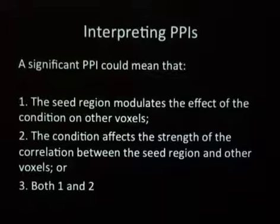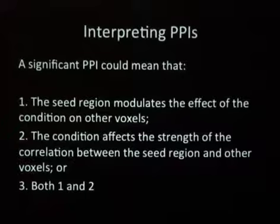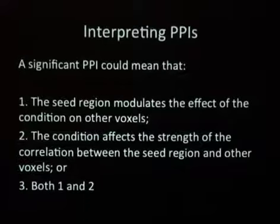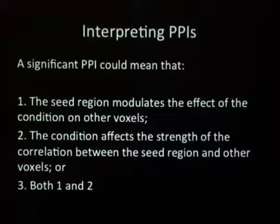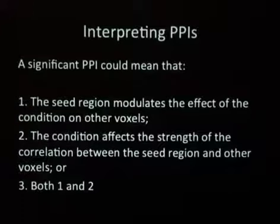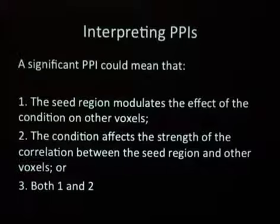Regarding positive versus negative PPI: a positive PPI means the correlation is mostly positive under that condition; a negative result means it's mostly anti-correlated under that condition. If something is just decreasing towards zero, this analysis probably wouldn't detect that. But a strong anti-correlation is definitely something you could detect. That's what the negative voxels tell you.